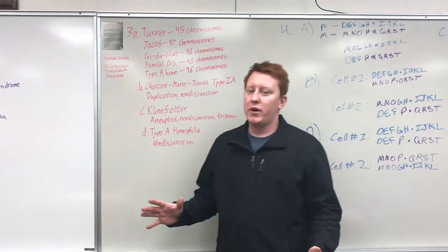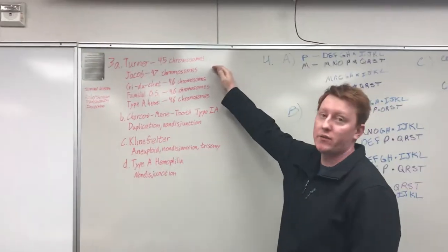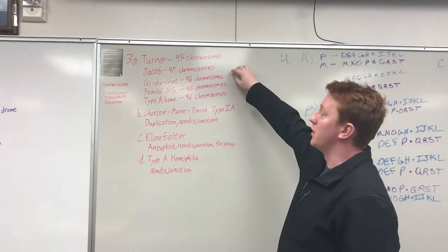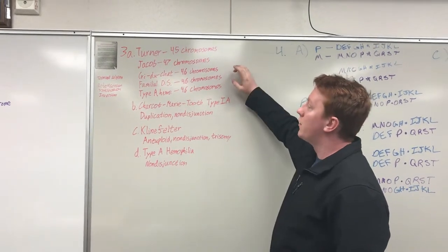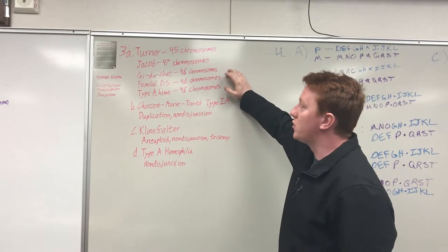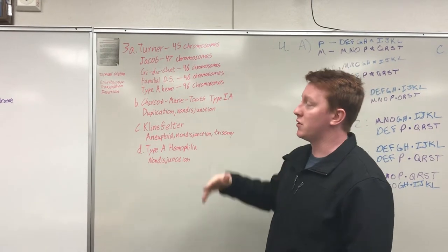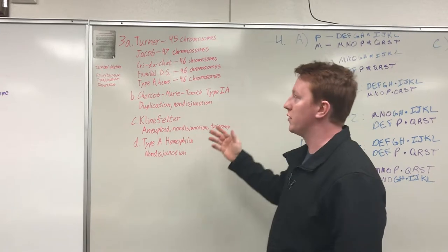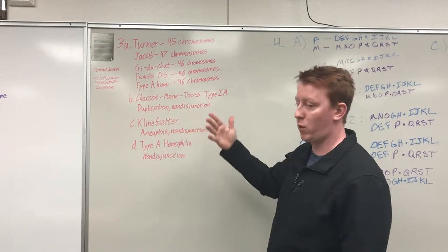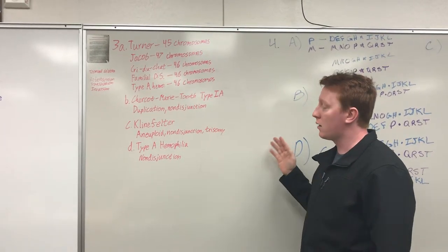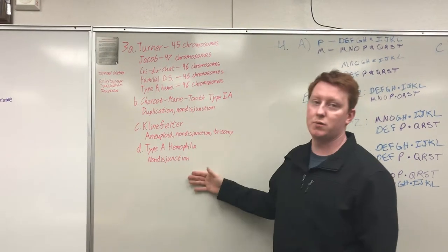For number three, part A: Turner syndrome has 45 chromosomes. Jacobs syndrome has 47 chromosomes. Cri-du-chat is a terminal deletion — I don't remember which chromosome — but since an entire chromosome isn't removed, we kept it at 46 chromosomes. Familial Down syndrome is Robertsonian translocation; no chromosomes are actually removed, so we kept that at 46. Type A hemophilia is just an inversion. Part B is Charcot-Marie-Tooth type IA, which we assumed was formed from duplication and non-disjunction. Klinefelter: aneuploid, non-disjunction, and trisomy. For part D, type A hemophilia — we just put non-disjunction.